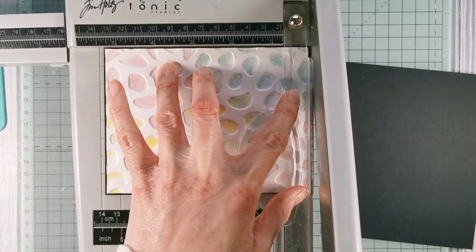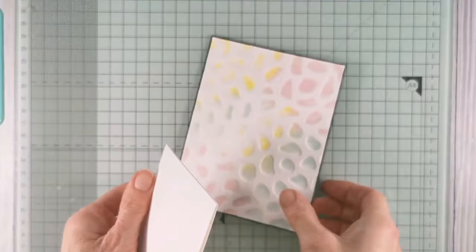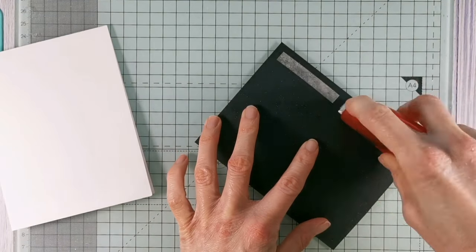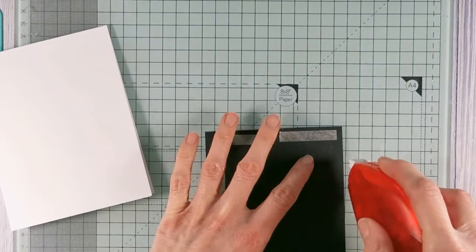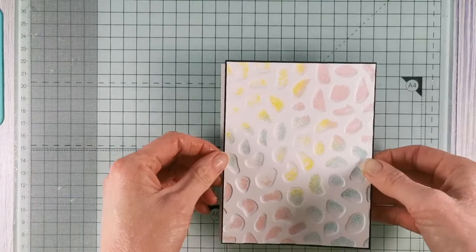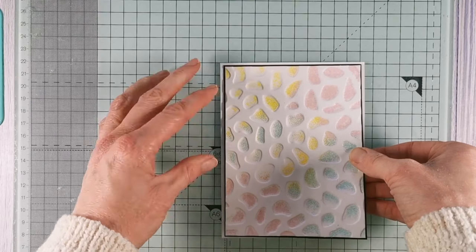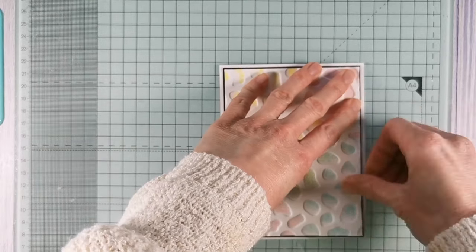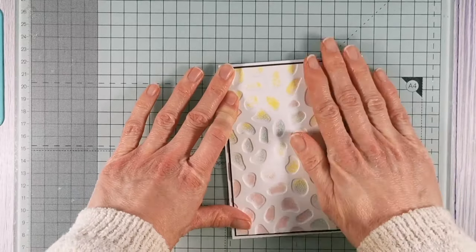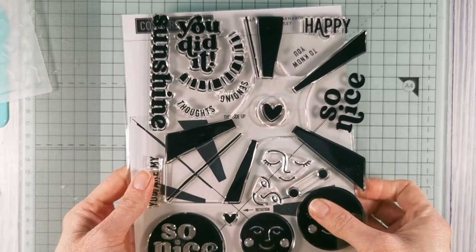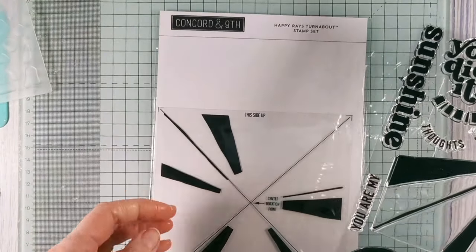By the way, if you are not catching the names of any of the products that I'm using as I go along, I'll list everything below in the description, and also there'll be an accompanying blog that goes with this video and all the details will be over there as well. So I'm just adding my card panel now onto an A2 card base, taking care to line it up properly so I've got a nice even white border all around the edge, and it's time to apply my sentiment.